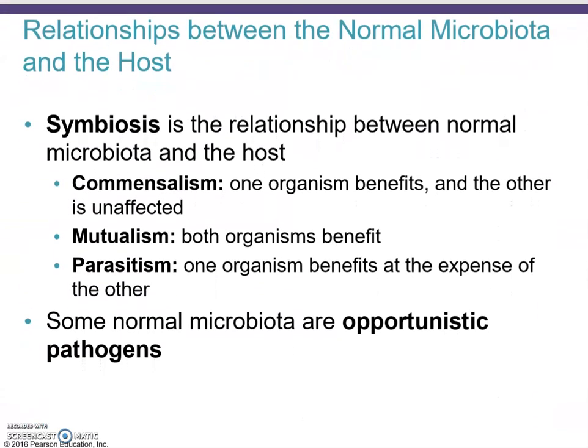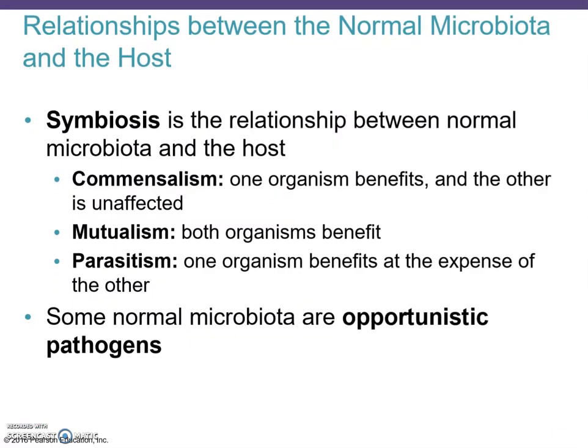The term symbiosis is a general term for any relationship between the normal microbiota and you as the host. There are three versions: commensalism, mutualism, and parasitism. Parasitism is the worst — a parasite benefits only itself at the expense of the other organism. A worm, for example, takes your nutrients and space and gives nothing in return.